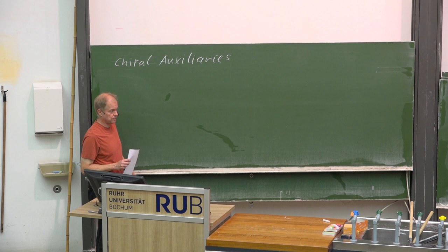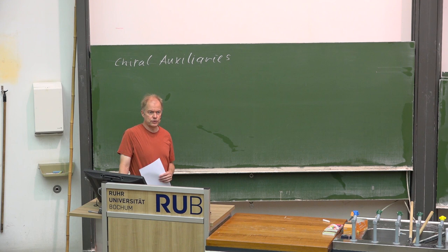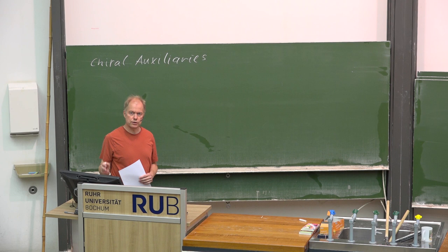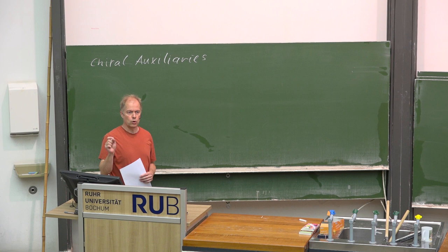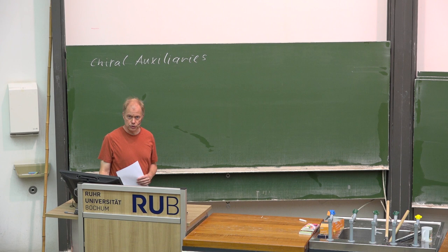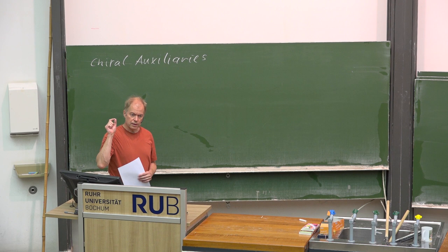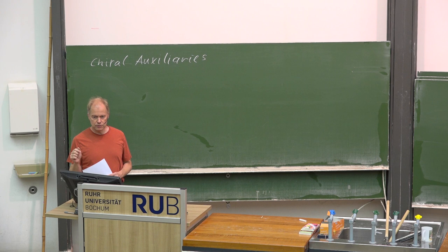In the case of a chiral auxiliary, you have a stereogenic functional group or stereogenic unit within your organic compound. You wish to do a transformation, and the stereogenic unit is the control element for the hopefully observed stereoselectivity.